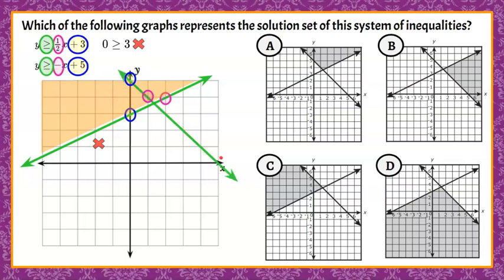So every point on the boundary line is also a solution to this inequality. It's greater than as well, so we're going to shade the area above, and let's go ahead again and check our origin.